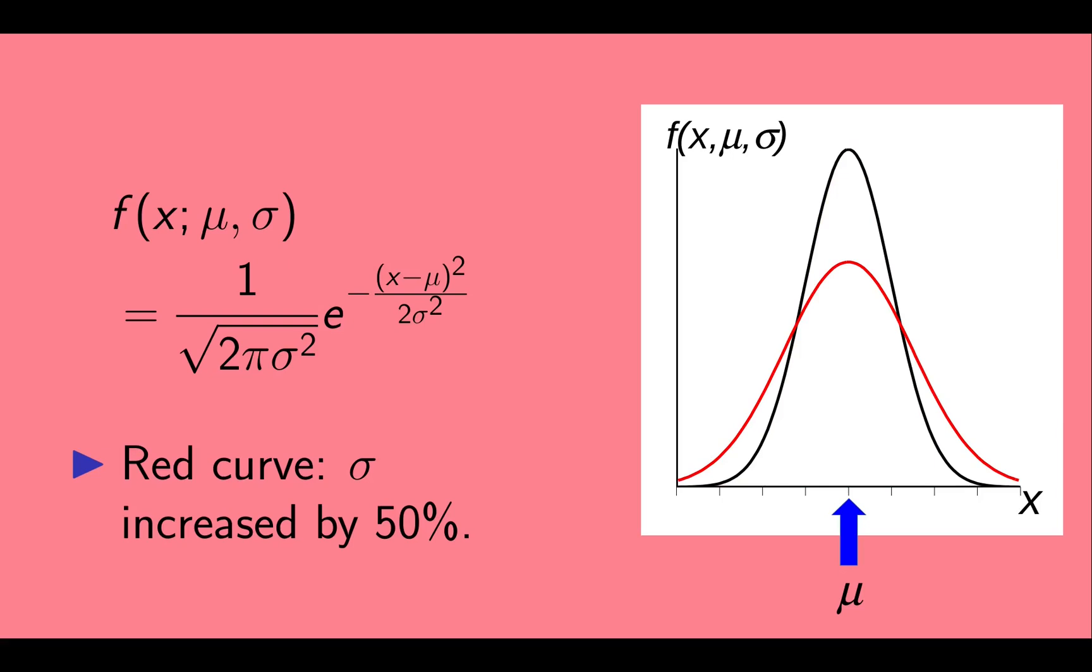Here we compare our original curve to one where sigma was increased by 50%, plotted in red. It is 50% wider, and the height has dropped to compensate.